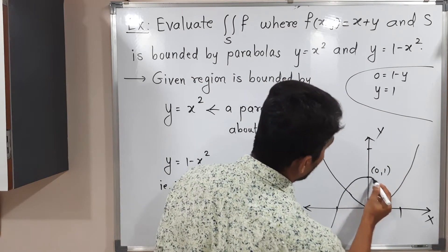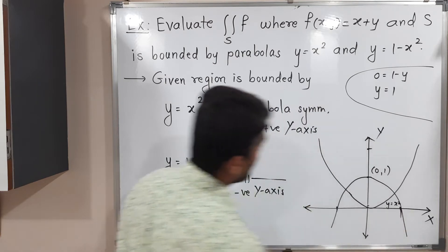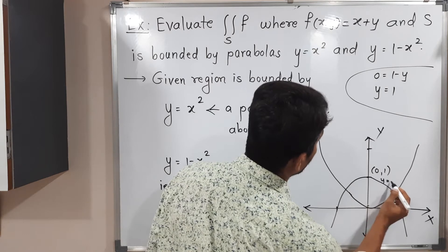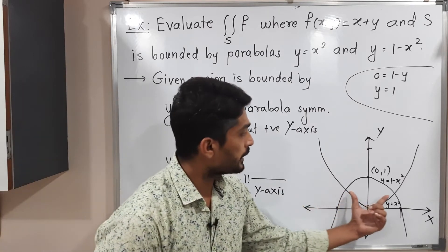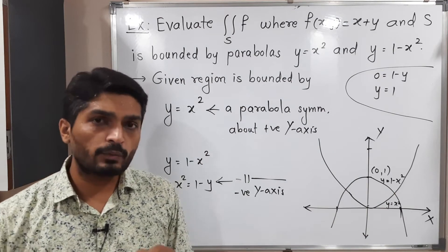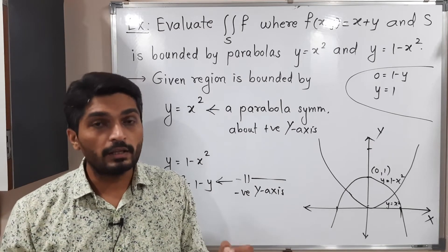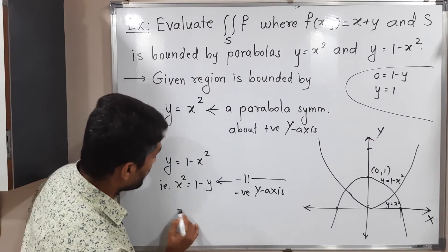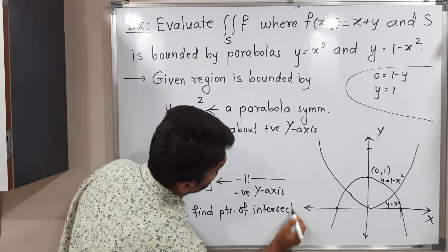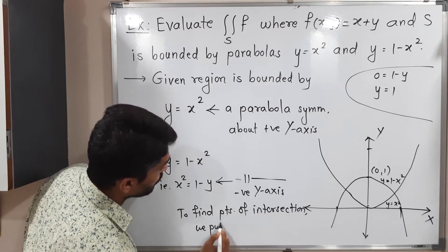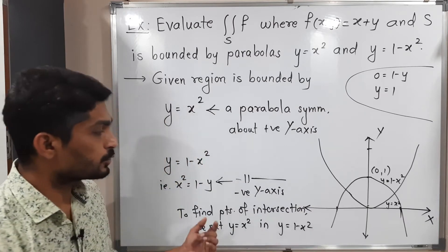We now have both parabolas: y = x² and y = 1 − x². We are interested in their points of intersection. To find points of intersection, we substitute one equation into the other — put y = x² into y = 1 − x² and solve.